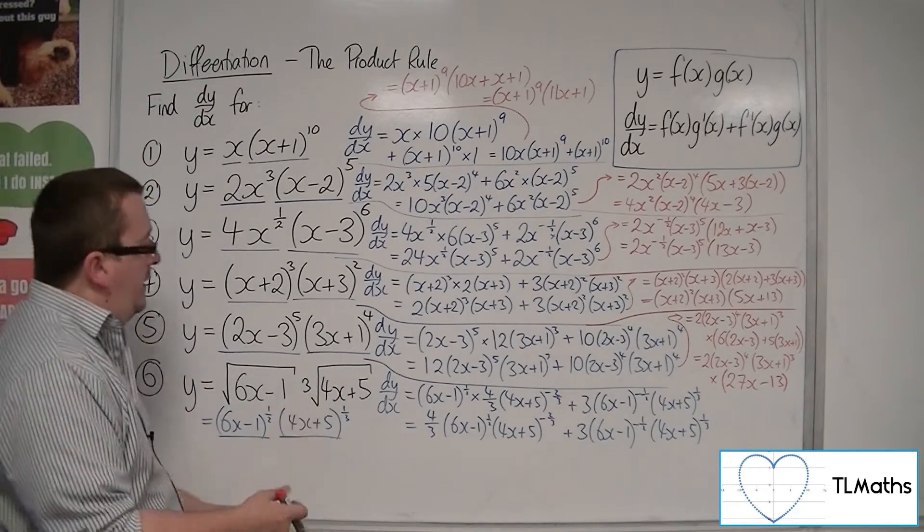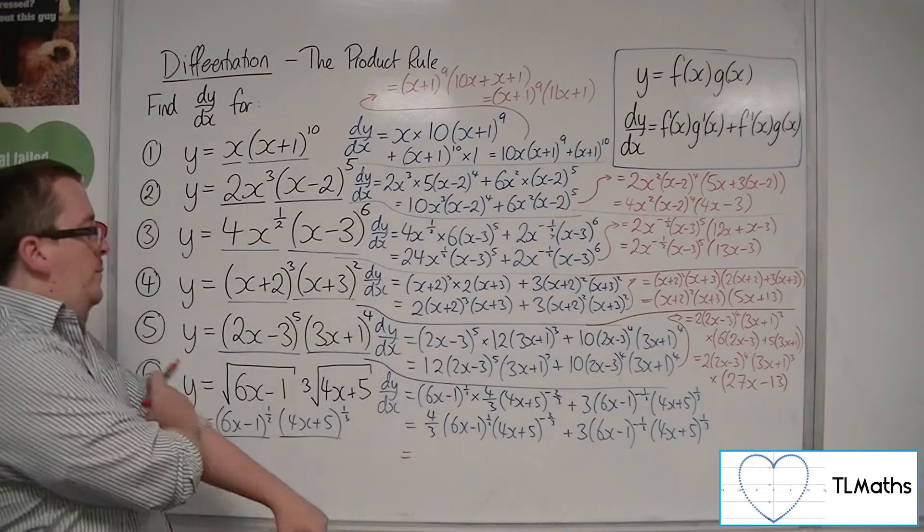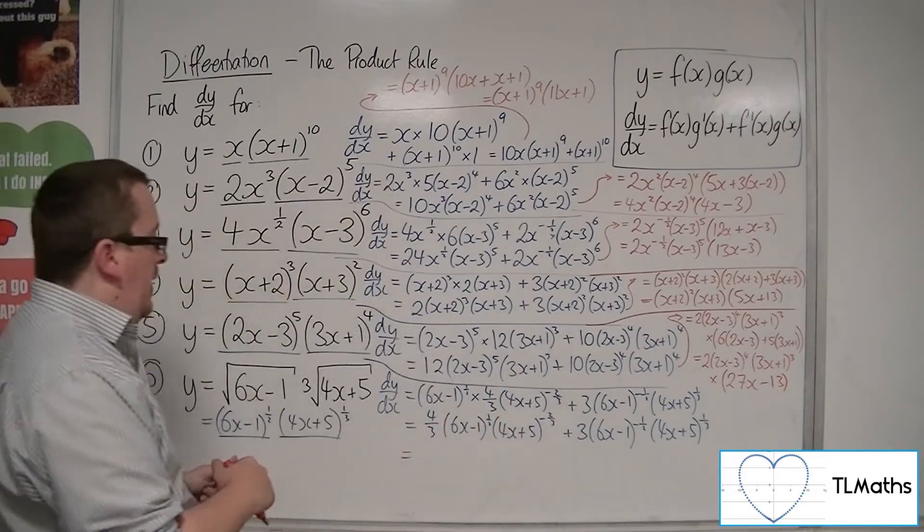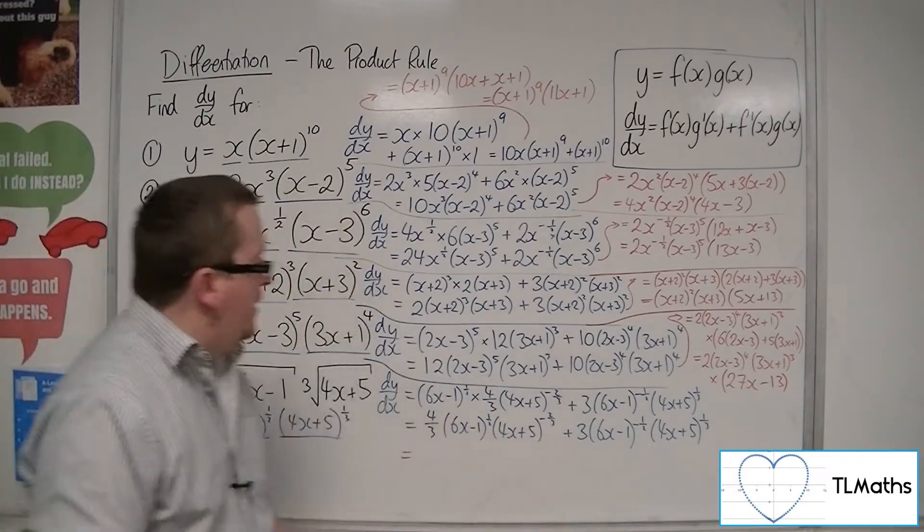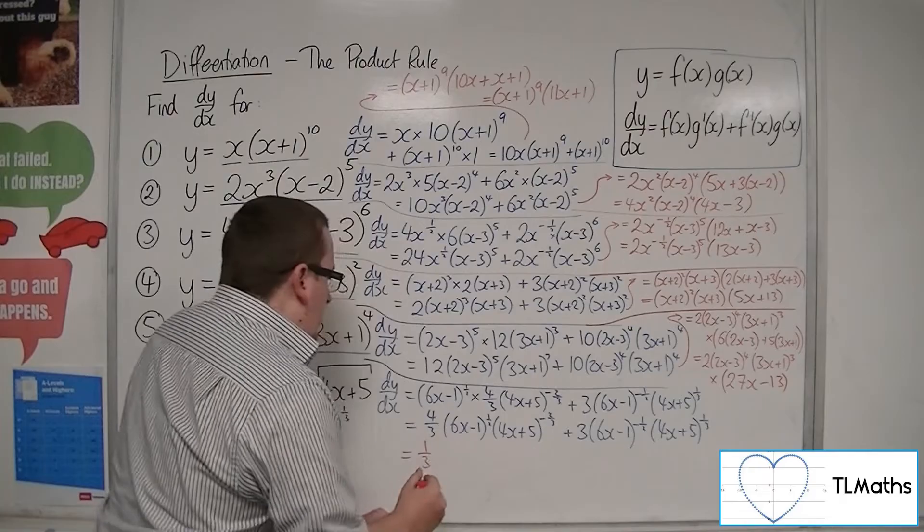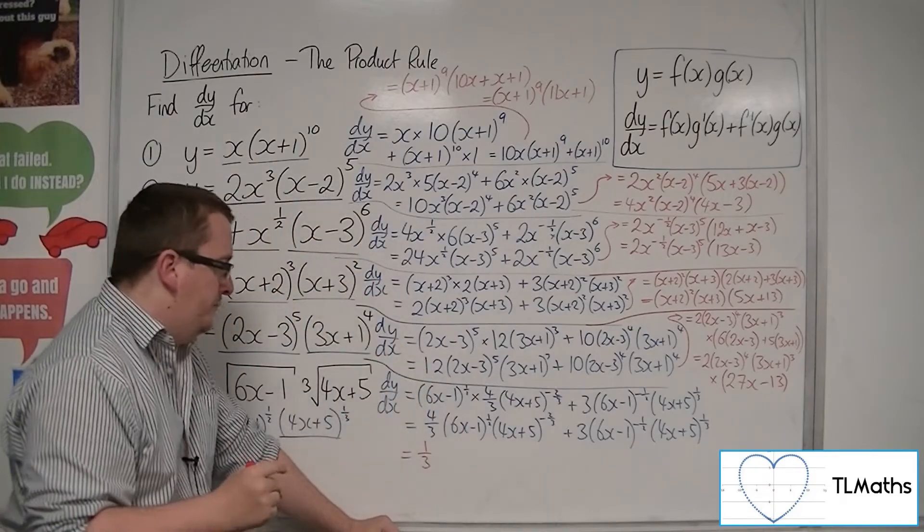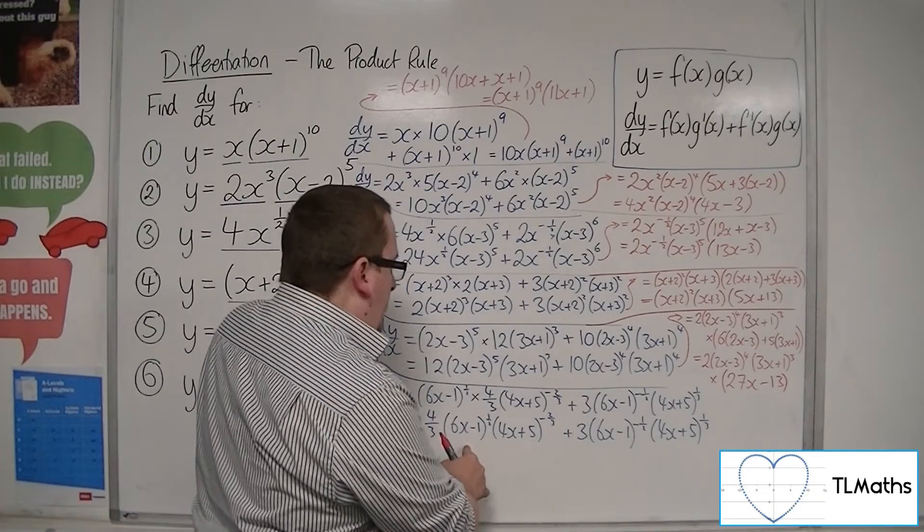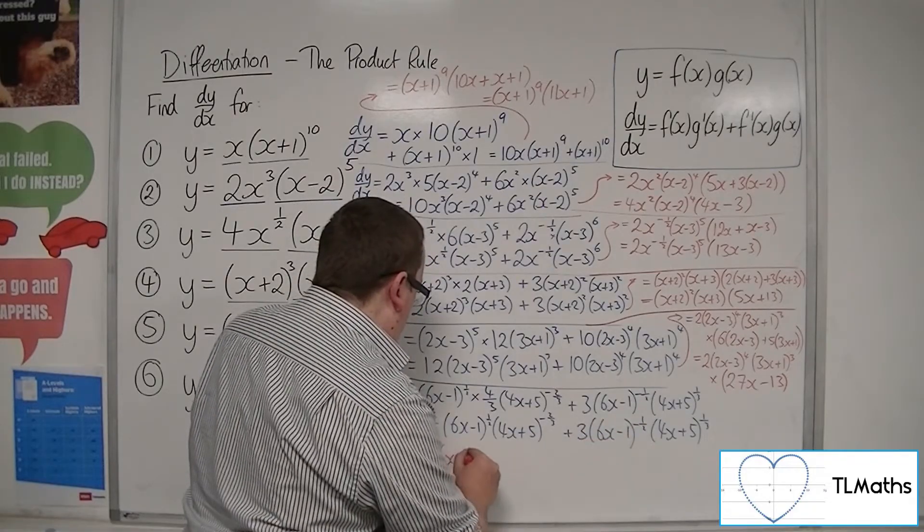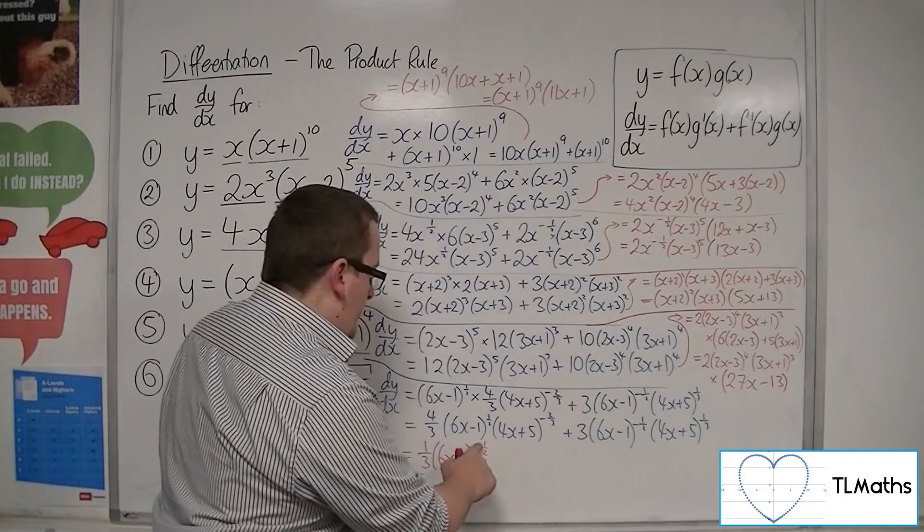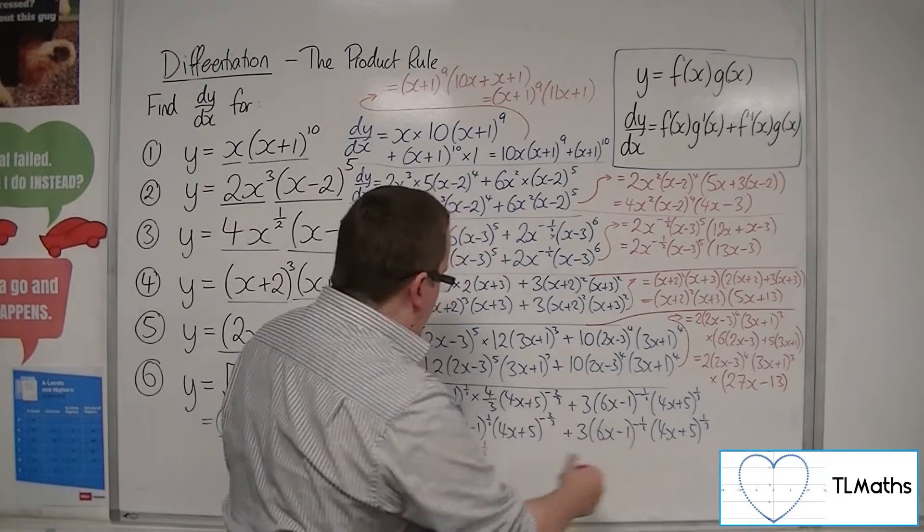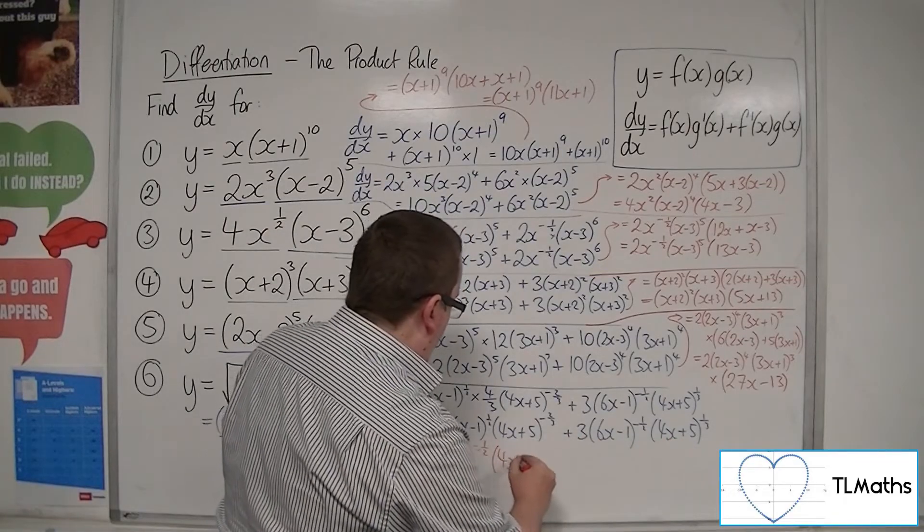So last but not least, we've got number 6. So, I could pull out, because I've got 4/3 and 3, I could pull out a third here. I probably will, I think. That will tidy it up a little bit. So I'm going to pull out a third. And I've got the (6x-1)^(1/2) and (6x-1)^(-1/2). So that's the one I'd pull out, (6x-1)^(-1/2). Then I've got this (4x+5)^(-2/3) against that one, so that one is the least. So that comes out.